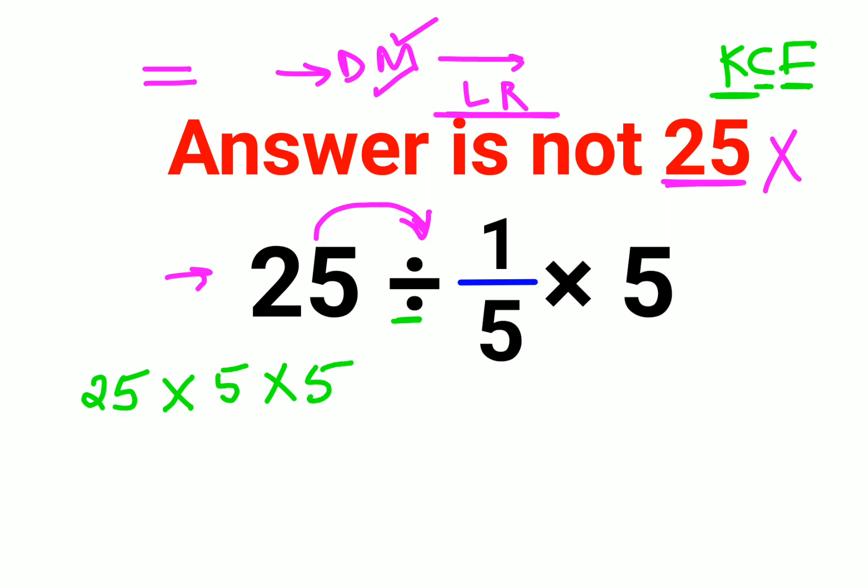So basically you have got 25 into 5 which is 125 into 5 which will get you 625.